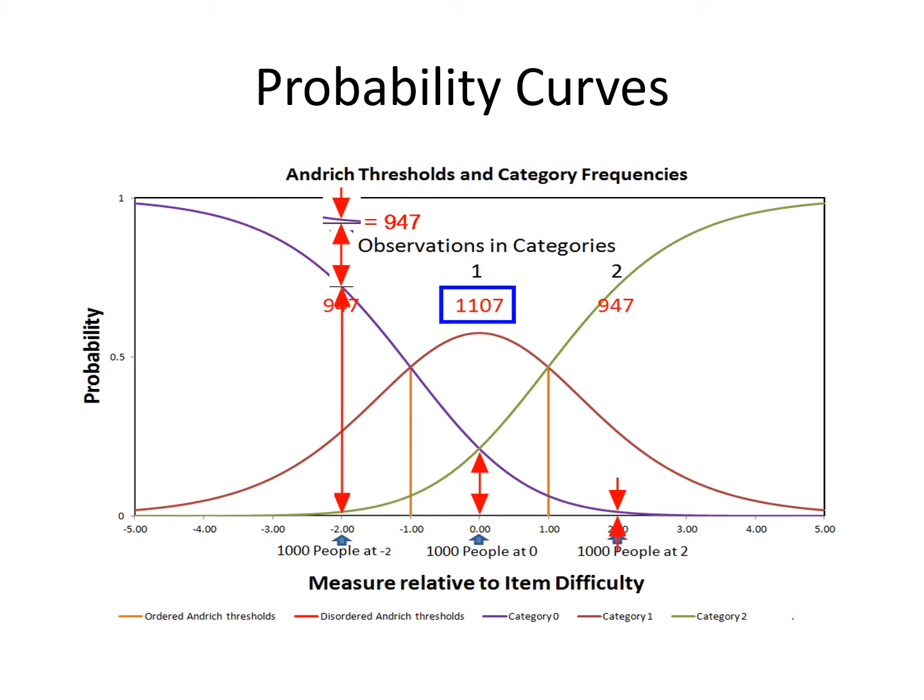Now, that's the picture as we expect it to be. The orange vertical lines are marking the locations of the Andridge thresholds, where adjacent categories are equally probable.